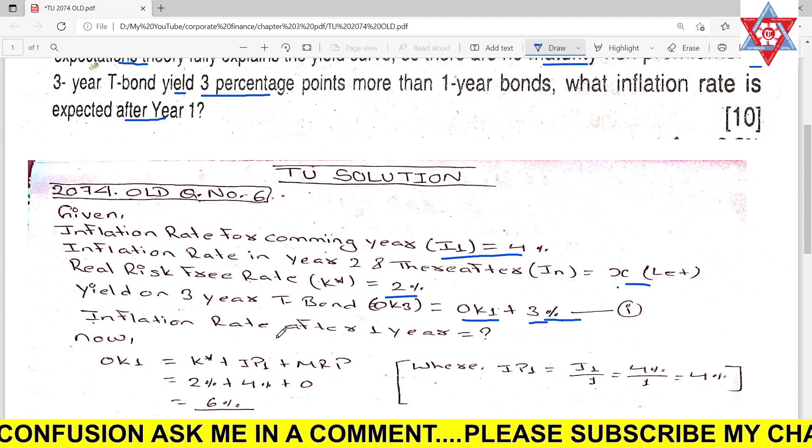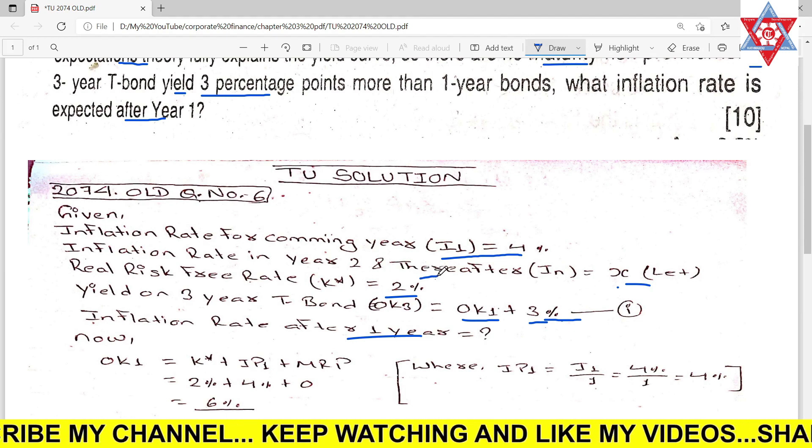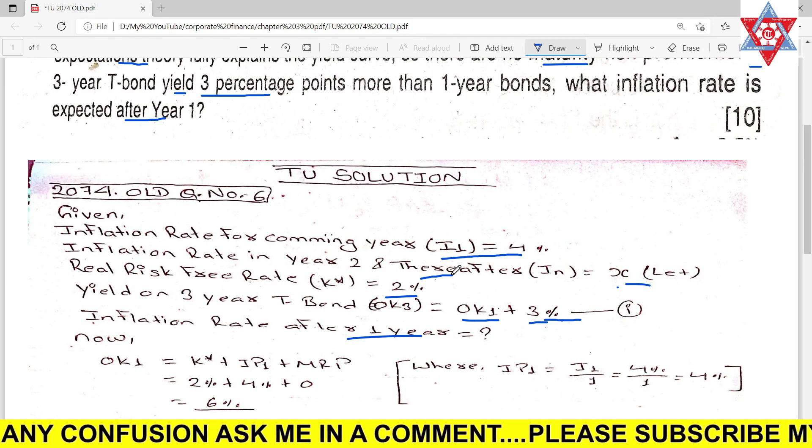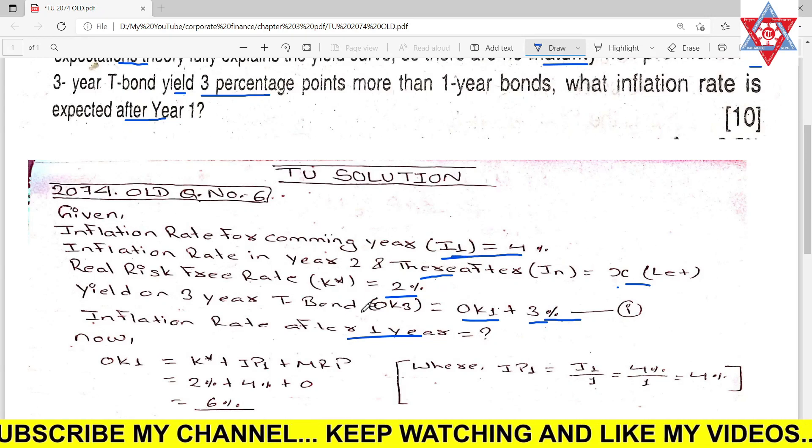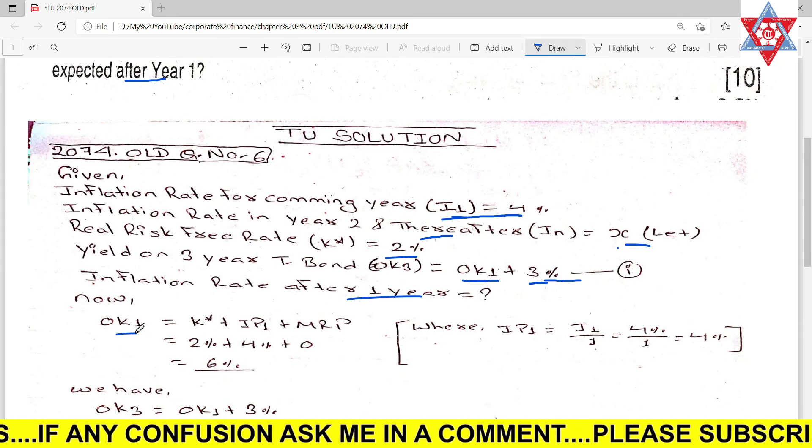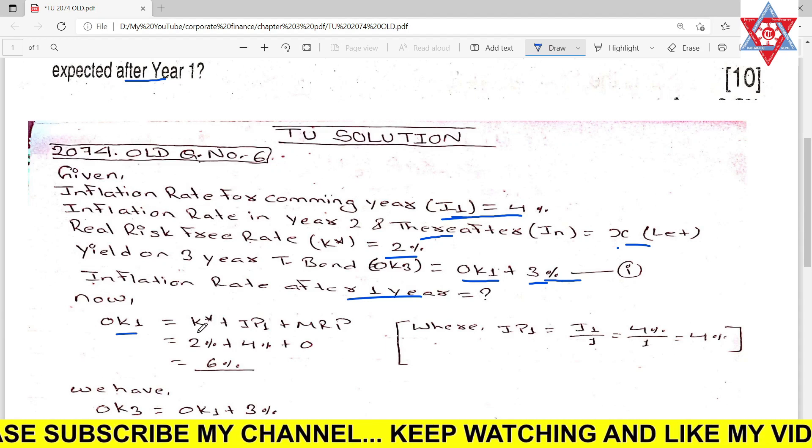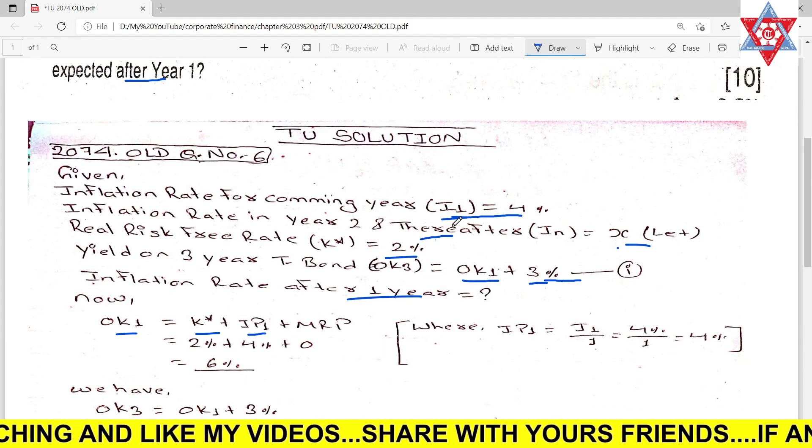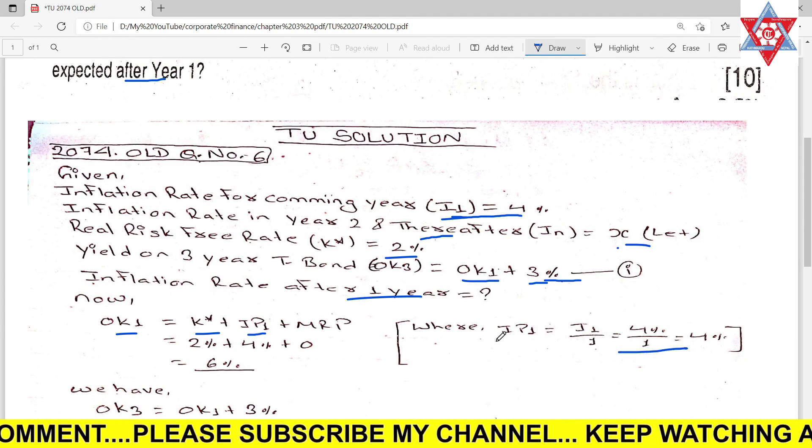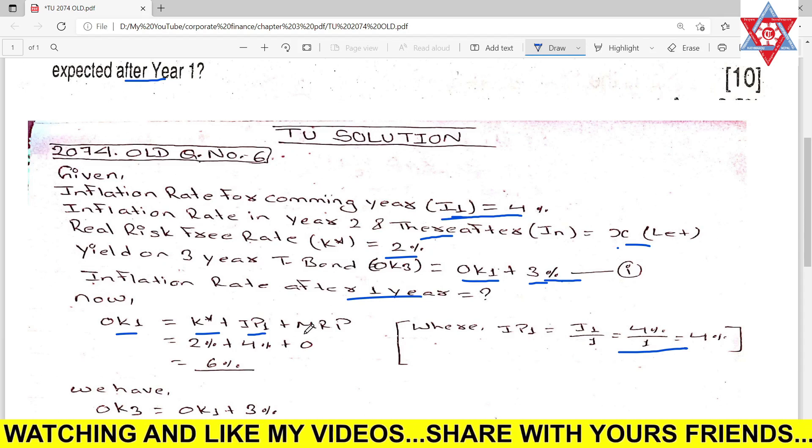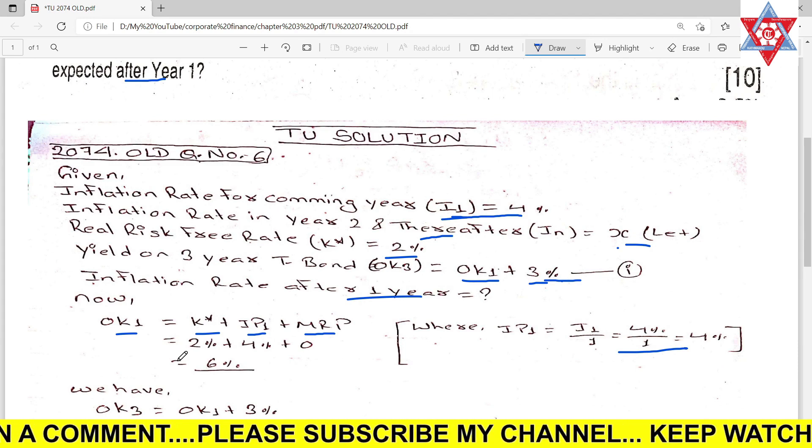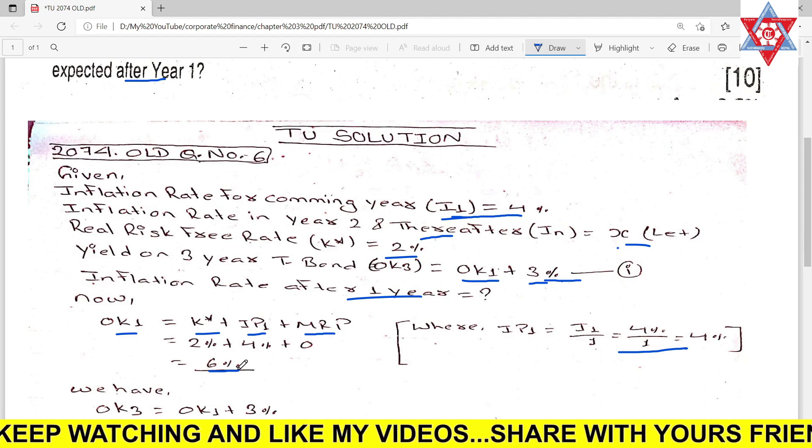Zero K₁, the interest rate on year one treasury bond is K* plus inflation premium on year one, which is 4%, plus maturity risk premium zero. So zero K₁ = 6%.